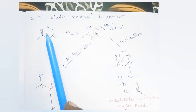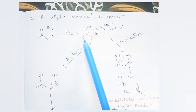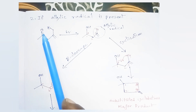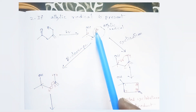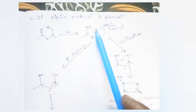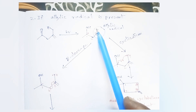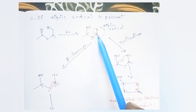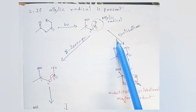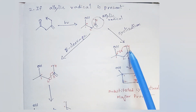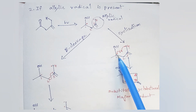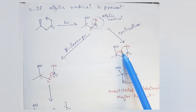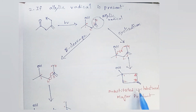When it is irradiated by UV light, the gamma hydrogen is abstracted by the oxygen atom, forming a radical here and a radical here. This is an allylic radical — this radical along with this is called an allylic radical. Since the allylic radical is stable, it favors cyclization. So this 1,4-biradical will join; these two radicals will join to form a substituted cyclobutanol as the major product.